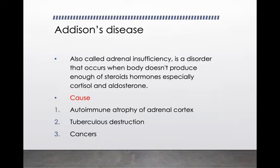Addison disease is also called adrenal insufficiency. It is a disorder which occurs when the body does not produce enough steroid hormones, especially cortisol and aldosterone. There can be multiple reasons — for example, autoimmune atrophy of the adrenal cortex, where autoimmune destruction of the cortical cells means they won't produce adrenal cortical hormones.